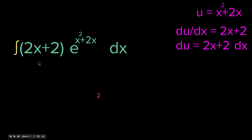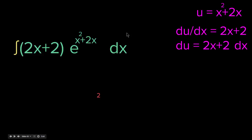In our integral we have (2x + 2) · e^(x² + 2x) · dx. The (2x + 2) dx part can be thought of as du, and x² + 2x gets substituted by u. So this entire complicated function is transformed into simply e^u du.